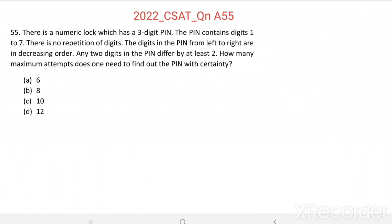Question number 55. There is a numeric lock which has a 3-digit PIN. The PIN contains digits 1 to 7. There is no repetition of digits. The digits in the PIN from left to right are in decreasing order. Any two digits in the PIN differ by at least two. How many maximum attempts does one need to find out the PIN with certainty?